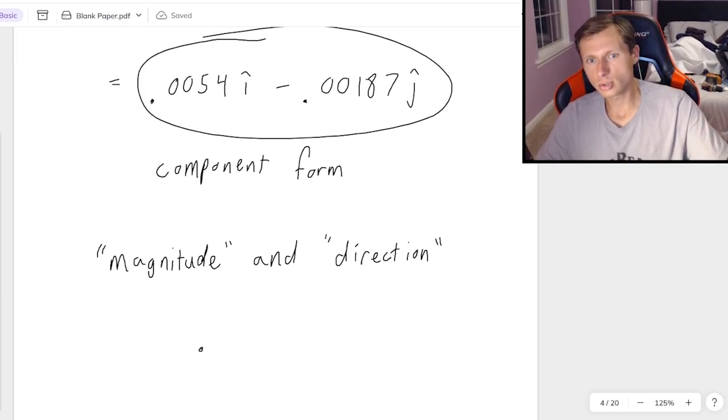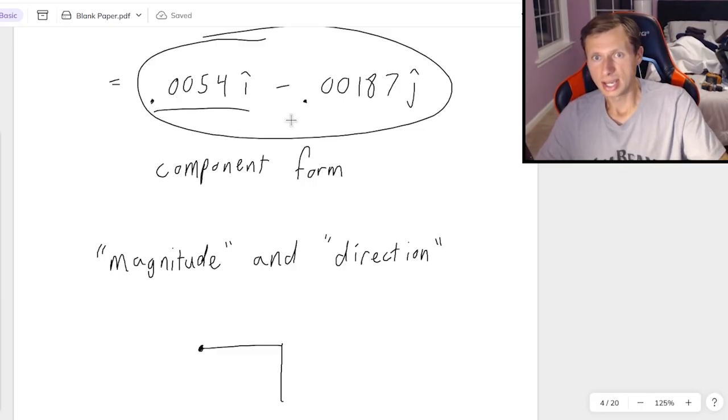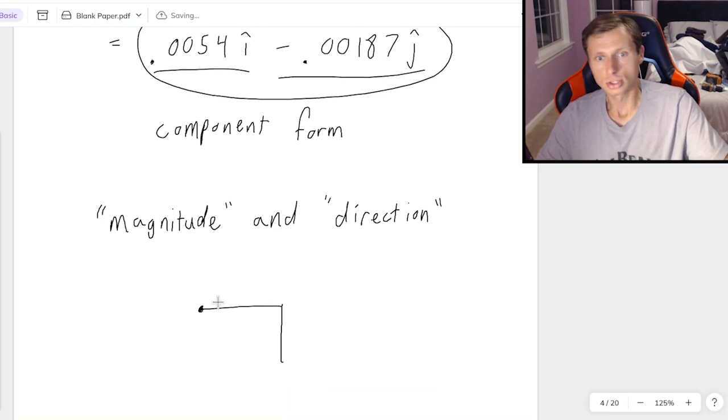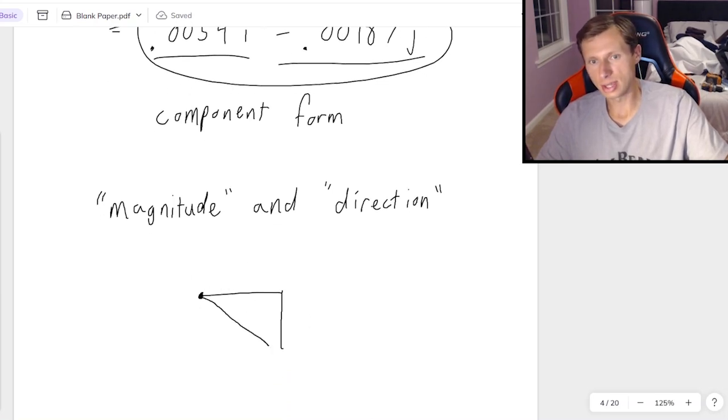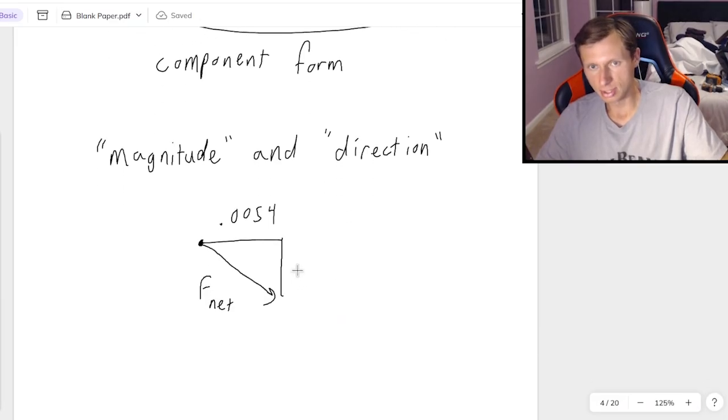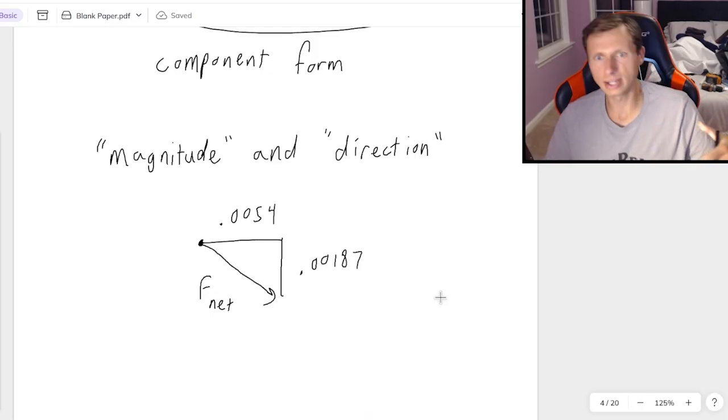This right triangle is going to point to the right and downward. How do I know that? Because i hat is positive, which means right, and j hat is negative, which means down. So right and down, there's my net force. And we have the x component, it's positive 0.0054. And then the y component is the negative 0.00187. But you'll just see me write positive because I'm going to ignore the negative. And you're allowed to ignore the negative as long as you know what direction we're going. And of course, the answer is down.